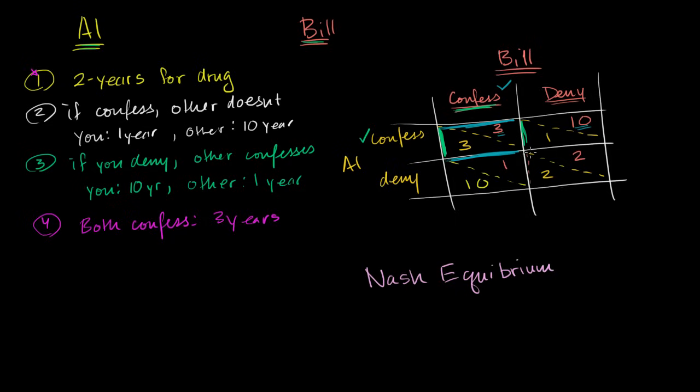The problem with this one is this is an unstable state. If one of them assumes that they're somehow in that state temporarily, they say, well, I can always improve my scenario by changing what I want to do. If Al thought that Bill was definitely denying, Al could improve his circumstance by moving out of that state and confessing and only getting one year. Likewise, if Bill thought that maybe Al is likely to deny, he realizes that he can optimize by moving in this direction. Instead of denying and getting two and two, he could move in that direction right over there. So this is an unstable optimal scenario.